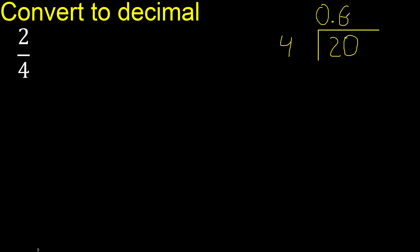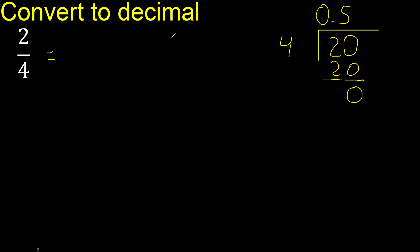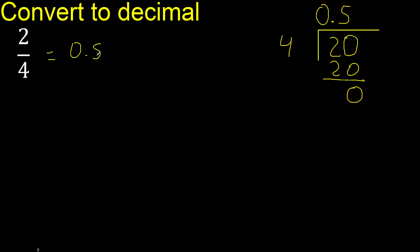4 multiplied by 6 is 24. 24 is greater than 20, therefore try another number. 4 multiplied by 5 is 20. Subtract: 20 minus 20 is 0. Finish, because there is no number that goes down, so we finish here.